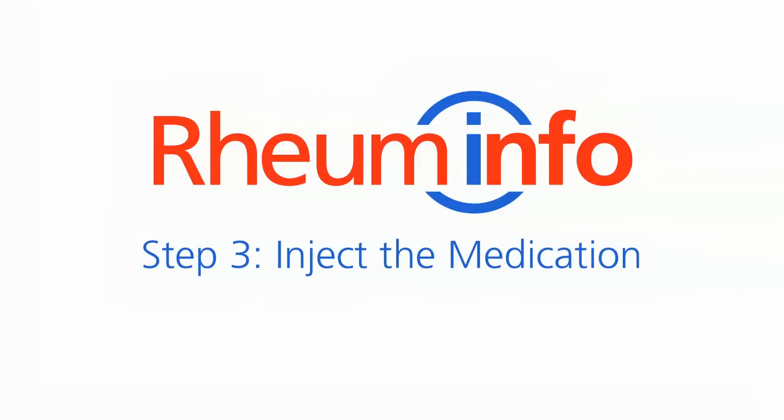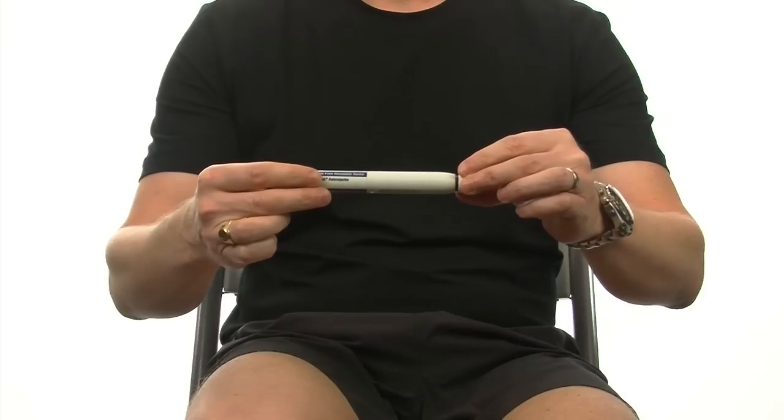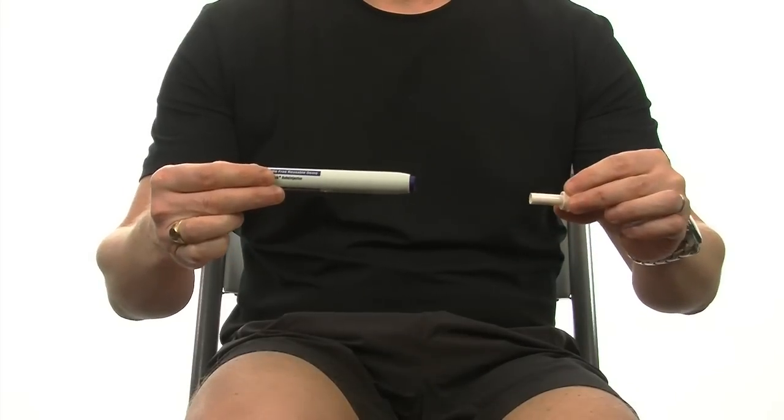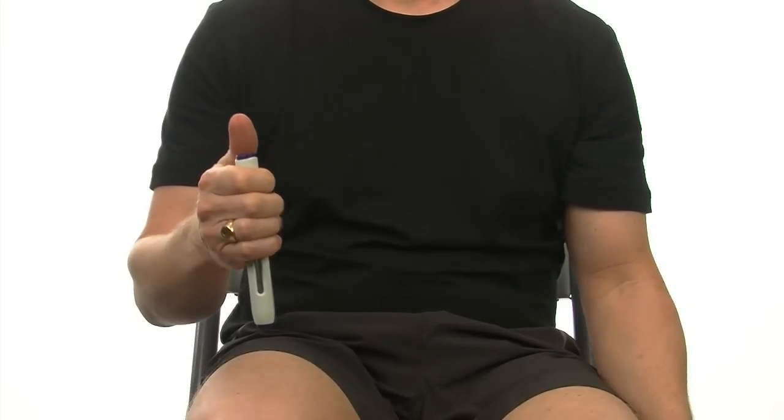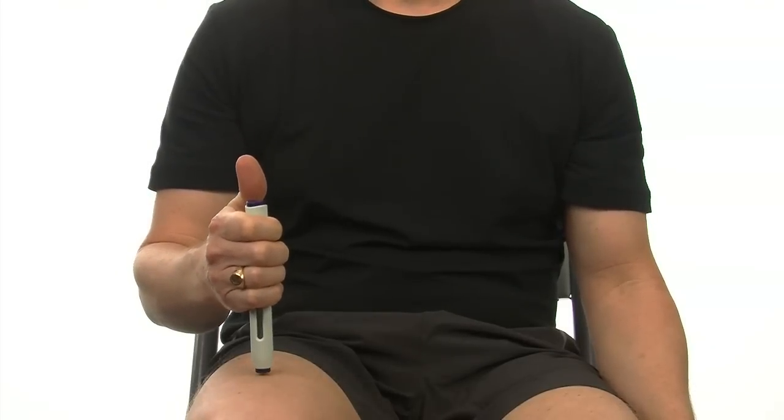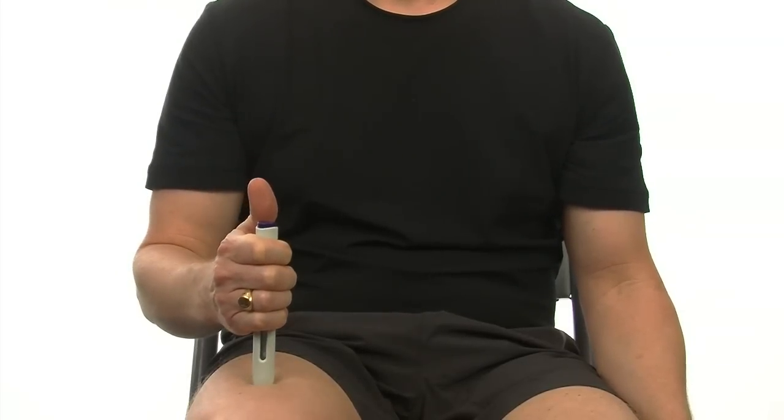Step three, inject the medicine. Remove the needle cap from the auto-injector. Place the auto-injector on the injection site at a 90 degree angle. Push the auto-injector firmly against the skin to unlock the device.